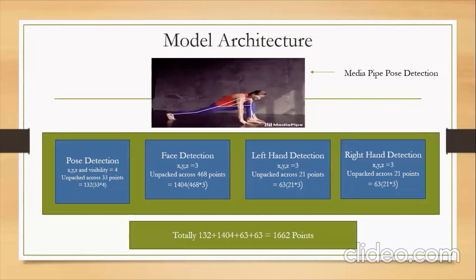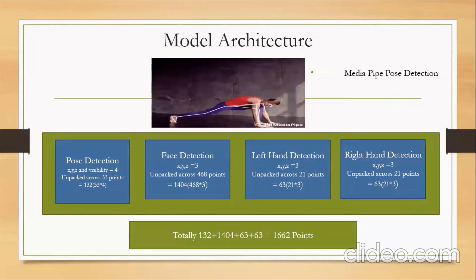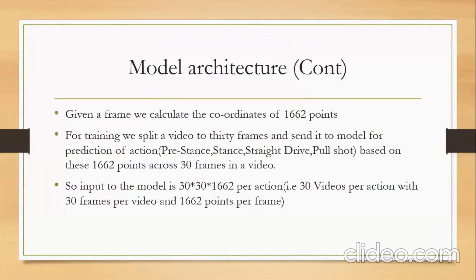The role of MediaPipe pose detection in our model should now be clear. Now that we have 1662 points per frame, we split the entire training data into 30 frames. For example, let's say we take one action — stance. While the video is running live, we split the video into 30 frames, calculating 1662 points for each frame. We need all 30 frames to decide what the action is.